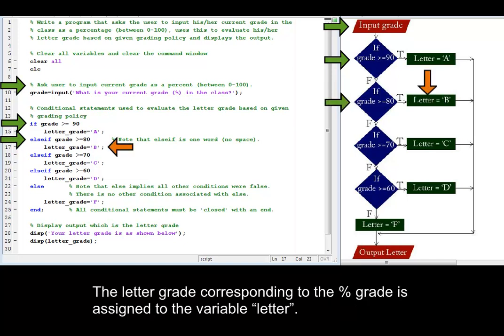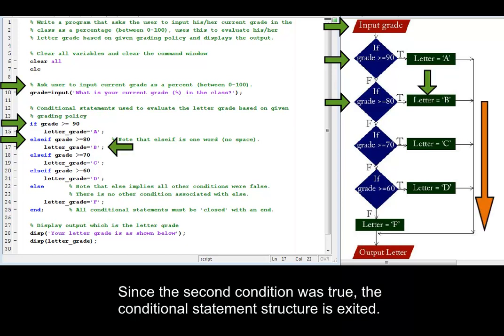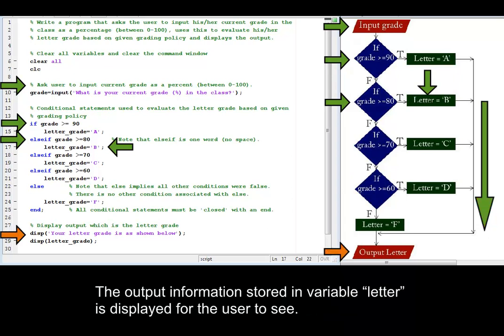The letter grade corresponding to the percent grade is assigned to the variable letter. Since the second condition was true, the conditional statement structure is exited. The output information stored in variable letter is displayed for the user to see.